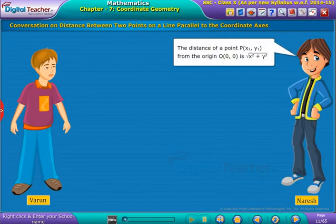Naresh says the distance of a point P(x1, y1) from the origin O(0, 0) is root x square plus y square. Let us see, does Varun agree with Naresh or not?